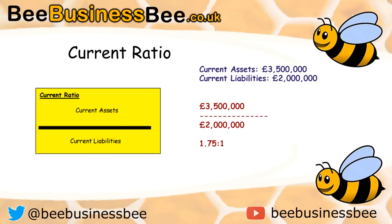That figure needs to be compared to previous years to see if it's improving, and also to competitors and the industry standard. For the current ratio, a figure between 1.5 and 2 is considered good. That will differ depending on the market the company operates in, and ideally you want to be as close to or better than your competitors.